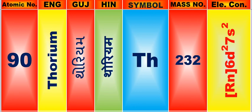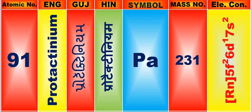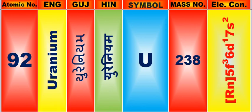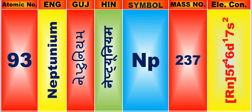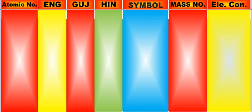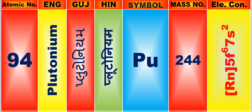Atomic number is 90, name of atom is Thorium. Atomic number is 91, name of atom is Protactinium. Atomic number is 92, name of atom is Uranium. Atomic number is 93, name of atom is Neptunium. Atomic number is 94, name of atom is Plutonium.